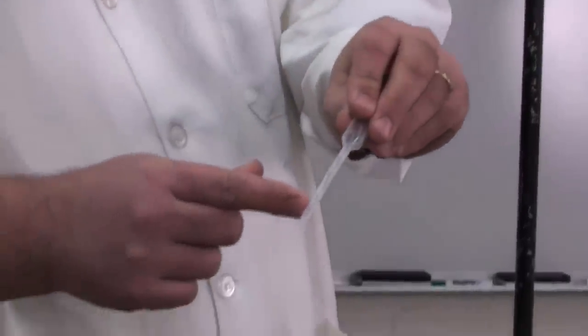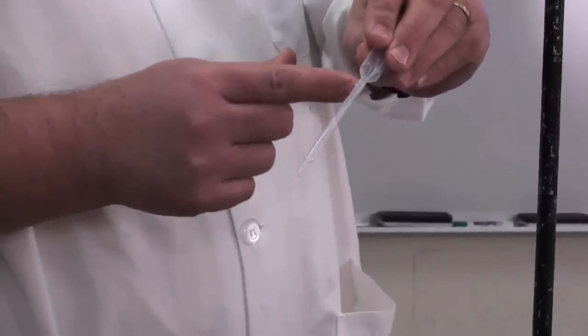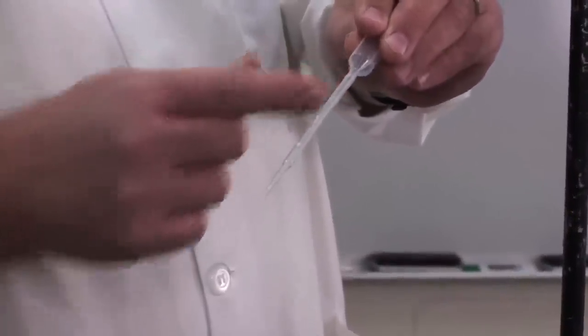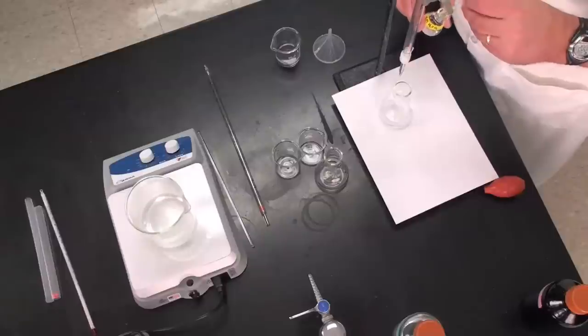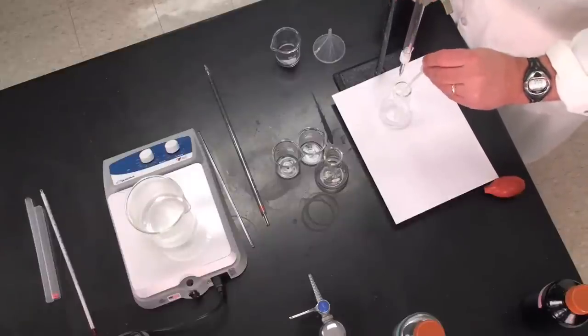It's graduated—the graduations are hard to see, but filling to the top of the neck is about 1 milliliter. So I'm going to take about 1 milliliter. Again, the amount is not critical, and I'm going to put that into my solution to provide those hydrogen ions.